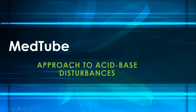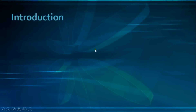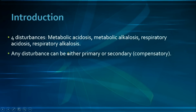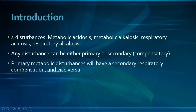Welcome to the last video of the acid-base disturbances series on approach to acid-base disturbances. From our previous videos, we had the four main disturbances: metabolic acidosis, metabolic alkalosis, respiratory acidosis, and respiratory alkalosis. Any of those could be either primary or secondary — also known as compensatory — because it occurs as a compensation to the primary disturbance. Primary metabolic disturbances will have a secondary respiratory compensation, and vice versa.